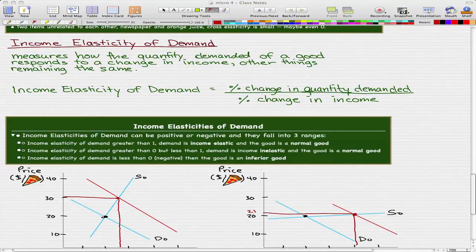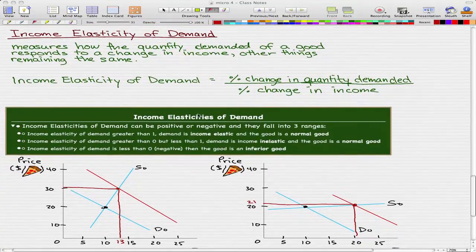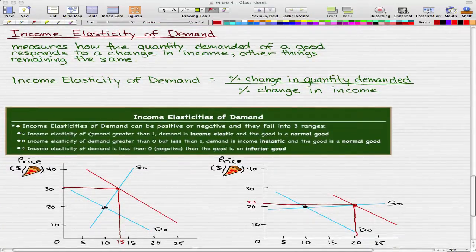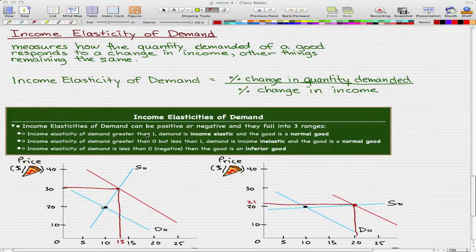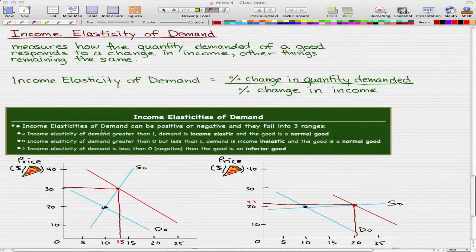Now a couple of notes about the Income Elasticity of Demand. The Income Elasticity of Demand can be positive or negative and they can fall into three ranges. The Income Elasticity of Demand, when it is greater than 1, the demand is income elastic and the good is a normal good.